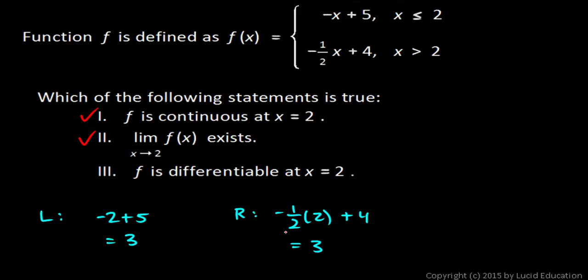And you can also see here a rigorous definition of continuity works as well. The left and the right limits are the same, and the limit equals the value of the function. So if the x value is equal to 2, then we use this top piece. So f of 2 is negative 2 plus 5. So f of 2 is equal to 3. So you can see the left and right limits are the same and equal to the value of the function.